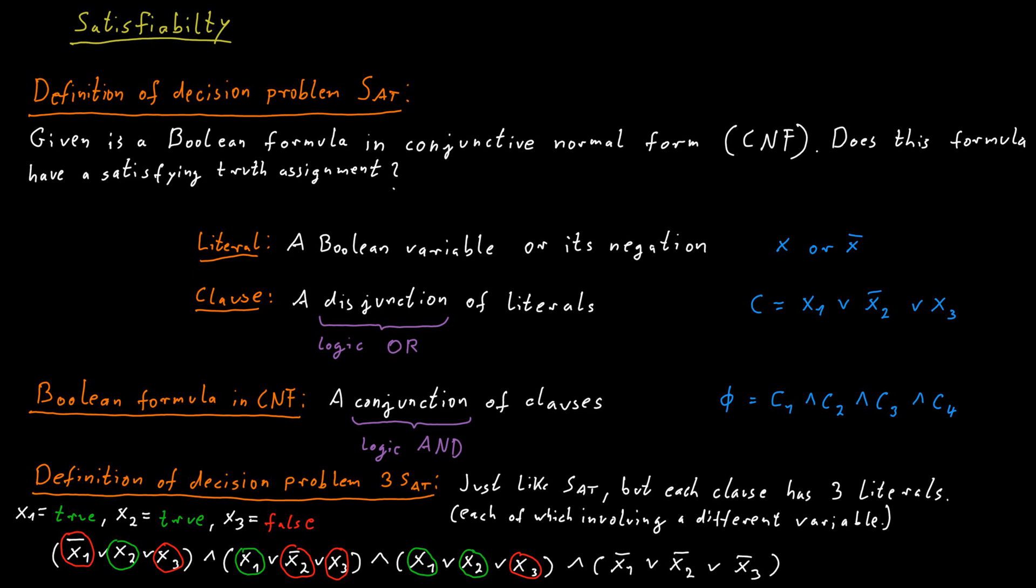And the last clause is also satisfied. It's not satisfied because of x1 or x2, because only not x1 and not x2 appear in the clause. But not x3 appears in the clause. And because x3 is false, not x3 is true. And therefore, the last clause is also satisfied. It includes a true literal.